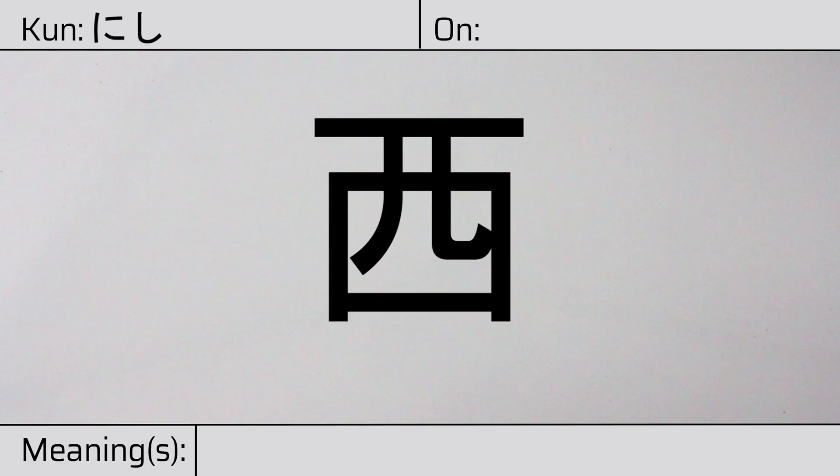And it has onyomi, or Chinese readings of sei, zai, or su. This character has the meanings west, or Spain.